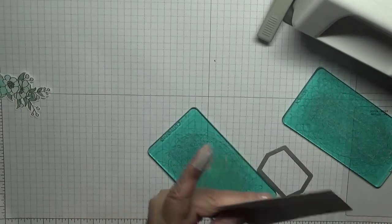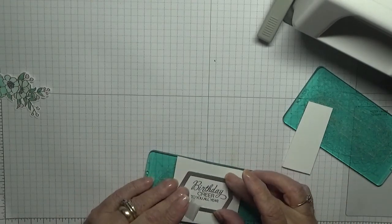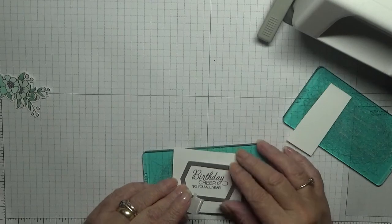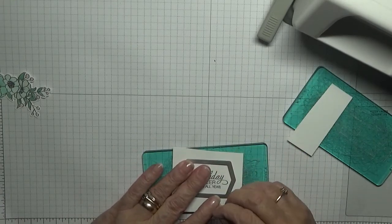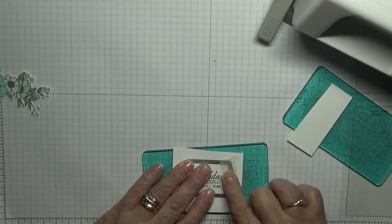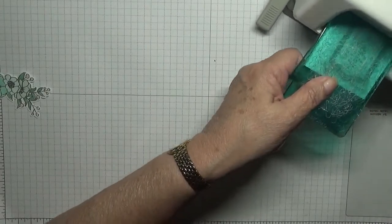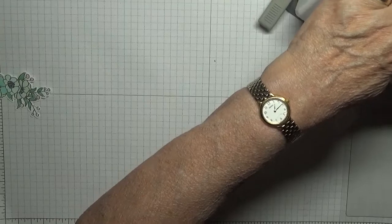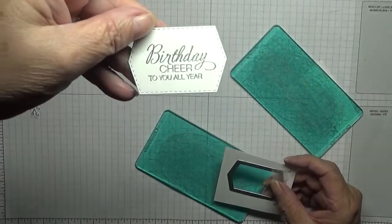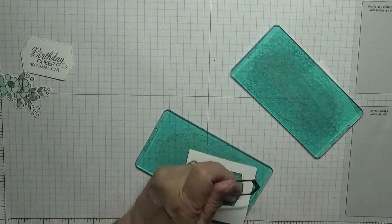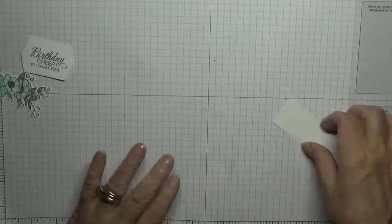And then we'll chop this off because we don't need it all. Place this on so it's nice and straight, add some tape to it, and cut it out. Very nice.